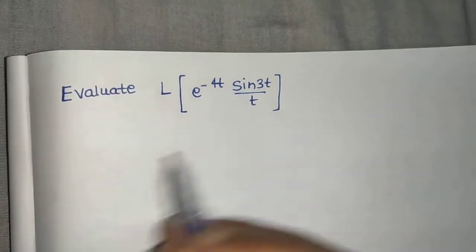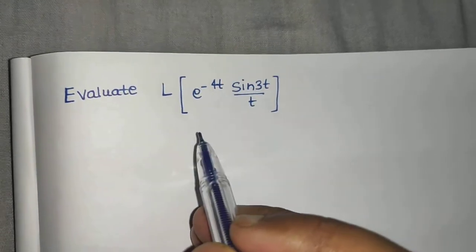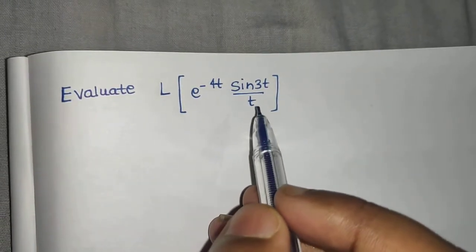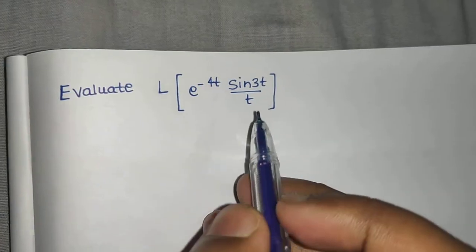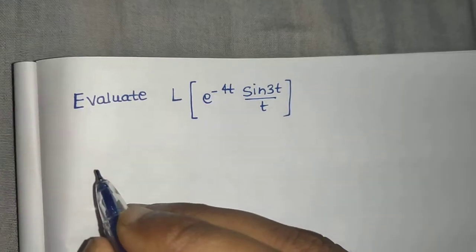So first of all we will find the Laplace transform for sine 3t. Then we will use the division by t property. Then we will use the first shift. So in three steps we will get to the answer.